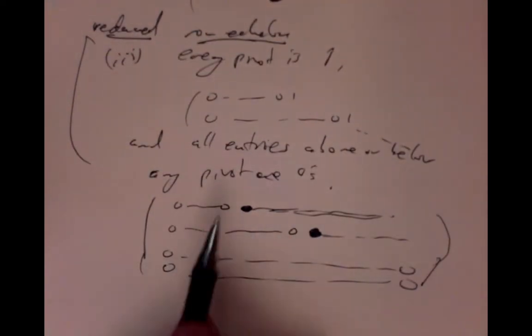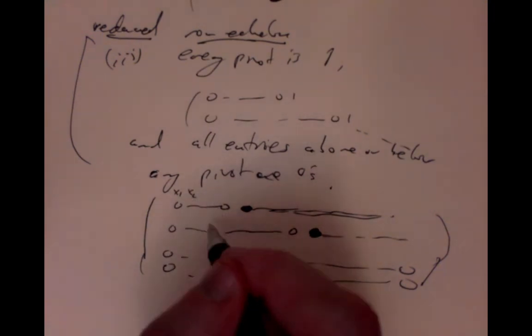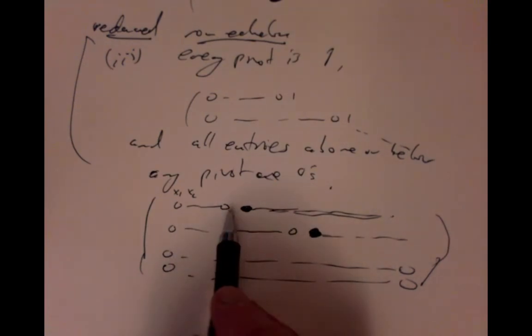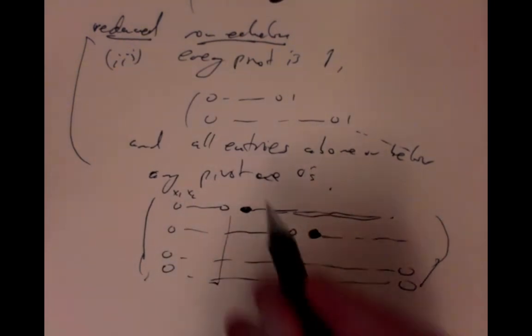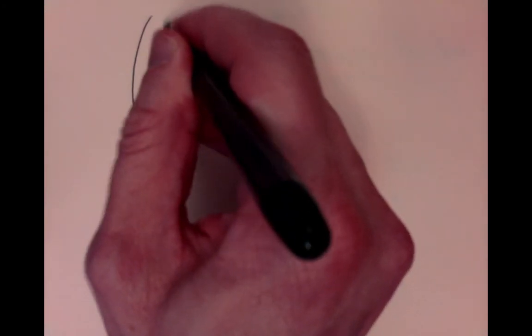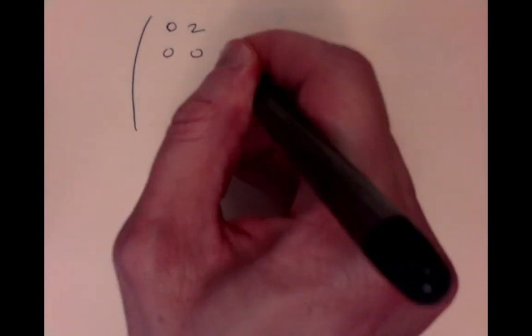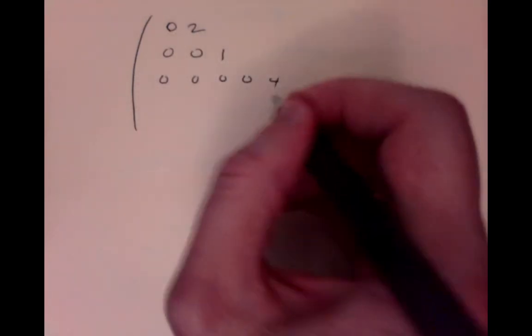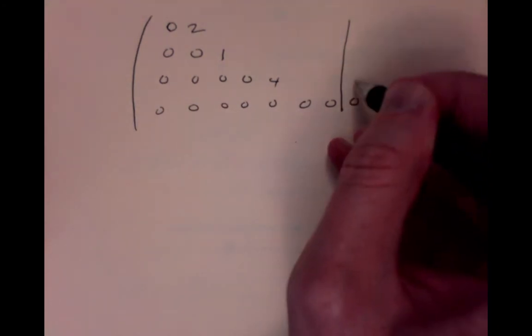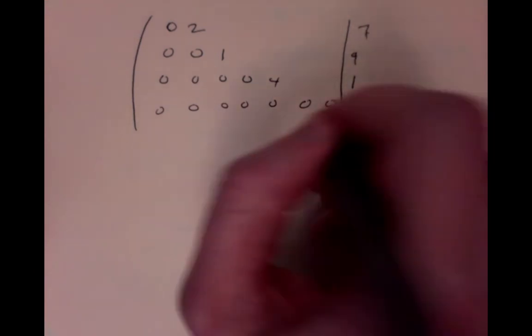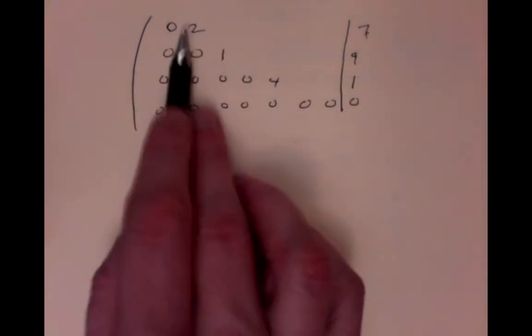When you look at a system in this form with variables x1, x2, and so on, if there are zeros all the way down in a whole block, you can't solve for any of those variables because they don't appear in any of your equations. Let's consider a concrete augmented matrix. For example, a matrix that is in row echelon form but not reduced, because the first non-zero entry in a row is a 2, not a 1. This isn't reduced, because to be reduced, the first non-zero entry in the row would have to be a 1.